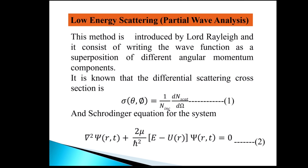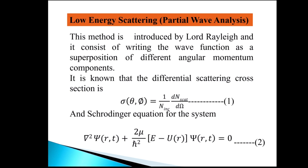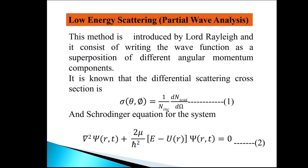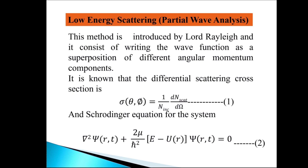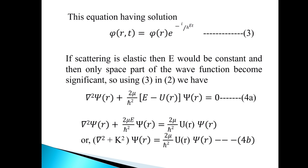Partial wave analysis is used for low energy scattering problems. The differential scattering cross section σ(θ,φ) equals (1/n_incident) × (dn_scattered/dΩ). The Schrödinger equation in the radial coordinate system for the scattering problem can be written as: ∇²ψ(r,t) + (2μ/ℏ²)(E − U(r))ψ(r,t) = 0, where U(r) is the scattering potential.